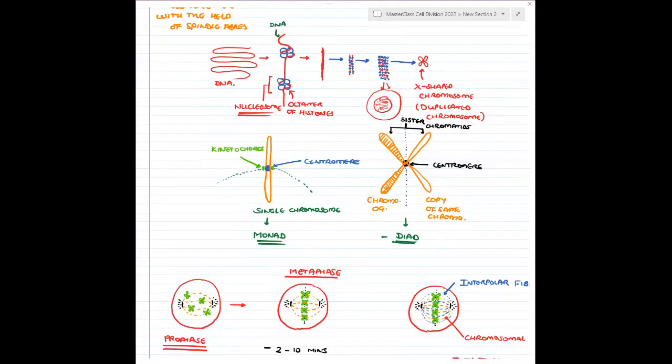Golgi complex and ER are formed in telophase. Mitochondria and plastids — the main important ones — are formed in your G1 and G2 phases. Cell organelles are not formed during mitosis itself. Most things are formed in G1 and G2. Centrioles are formed in S phase. The majority of organelle formation happens in G1 and G2 phase only.